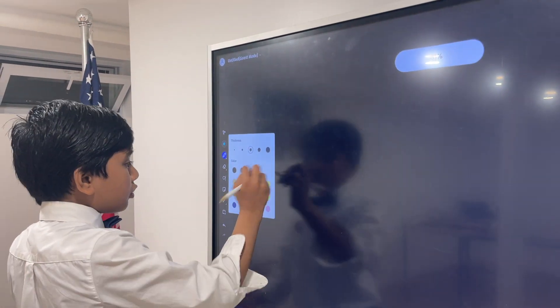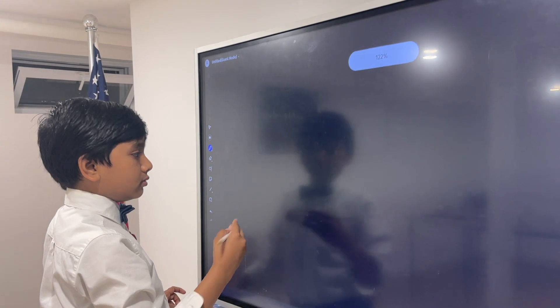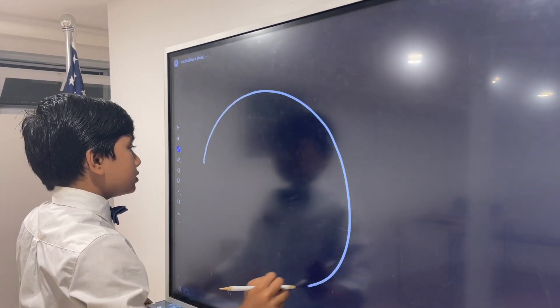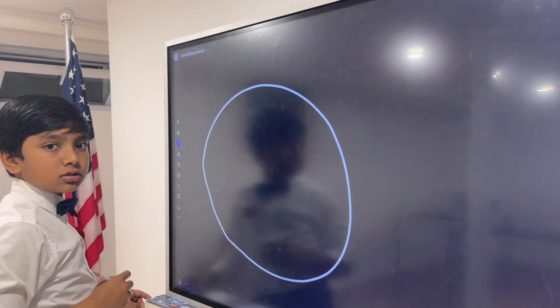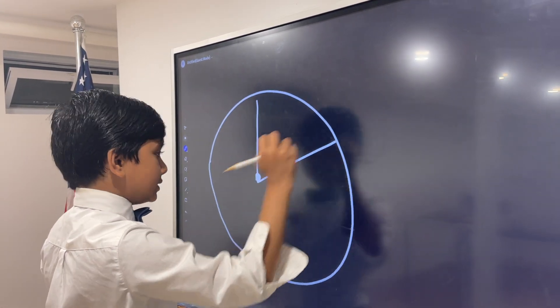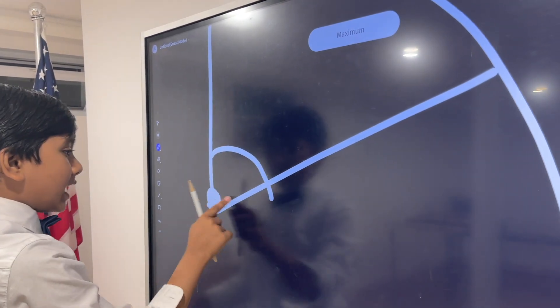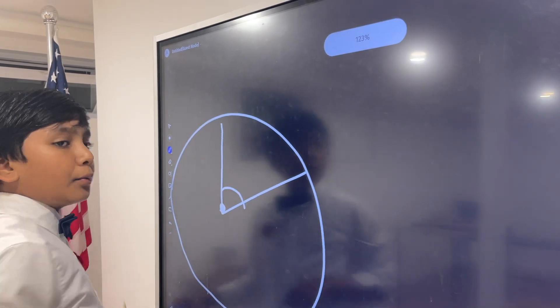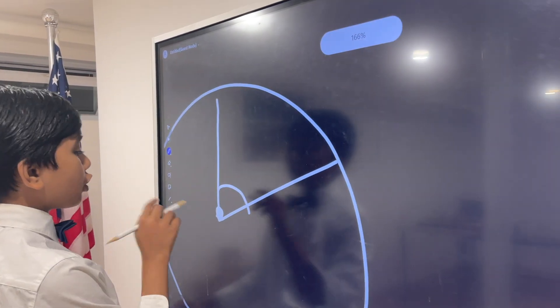Now there are two types of angles that can make arcs. First of all, there's the central angle, which has rays that protrude from the center of a circle, thereby making it a central angle.